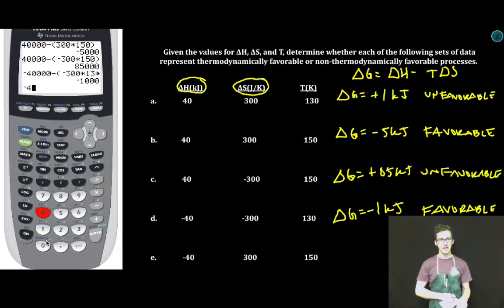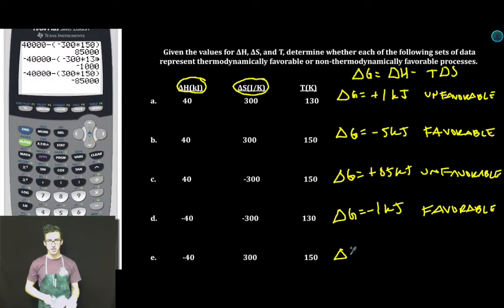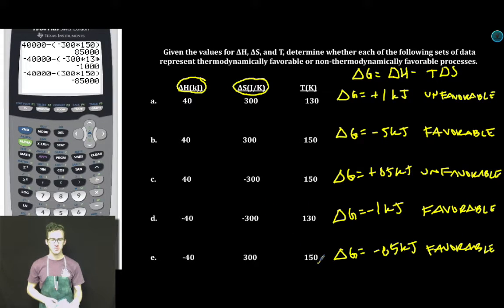Uno mas: negative 40,000 joules minus parentheses 300 times 150 close parentheses. Enter: delta G equals negative 85 kilojoules. Favorable. Negative delta G tells me so. Have a fantastic day.